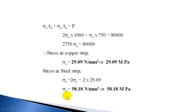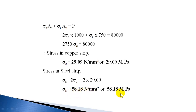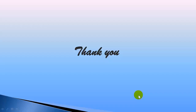Steel is subjected to a tensile stress of 58.18 N/mm² per unit area of cross-section. We can also find the load shared by steel by multiplying this stress with the area of steel, and the load shared by copper by multiplying the copper stress with the area of copper. That's all for today, thank you for watching.